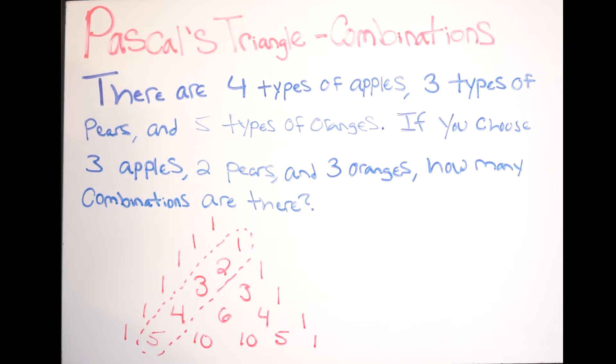And from here it's pretty straightforward. So let's do the apples first. There are 4 types of apples, so that's our total. So what I'm going to do is look at my diagonal, I'm going to look for 4. Okay, here it is. I'm going to use this row here, right? So how many are we choosing for our apples? Well, it says we are choosing 3 apples.